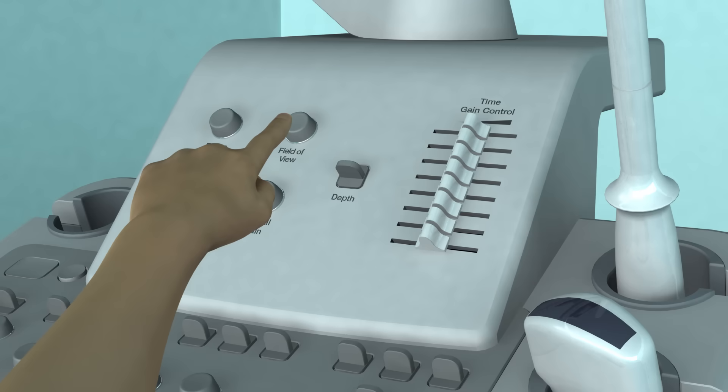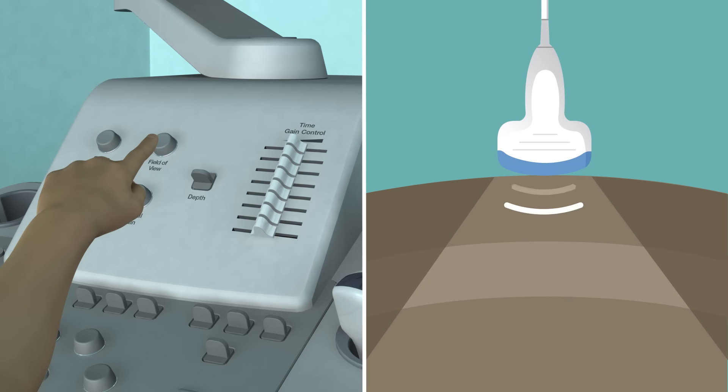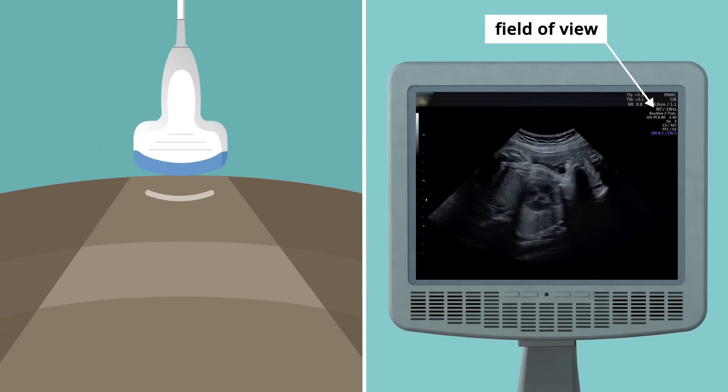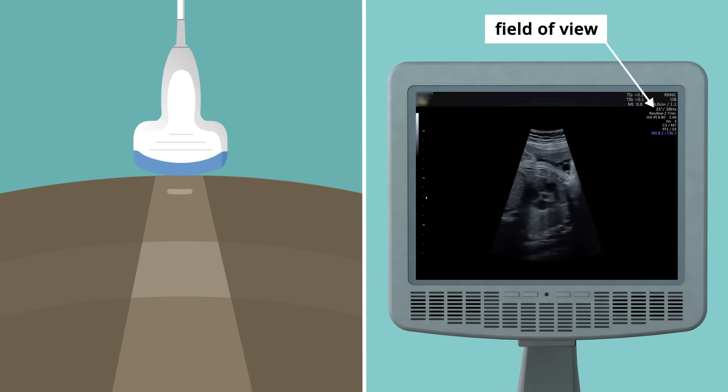The field of view controls the width of the image. The narrower the field of view, the better the resolution of the image.